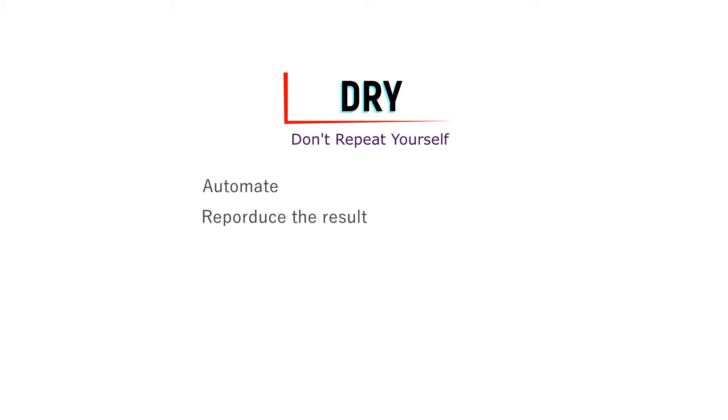DRY, or 'Don't Repeat Yourself,' is an approach in programming to write efficient code — code that automates where possible, is reproducible, and easy to follow by yourself in later days. It can become challenging to understand your code if it was not properly coded and documented, and also for your colleagues to understand. The focus of DRY is to avoid repetition.